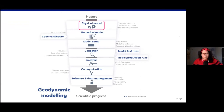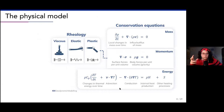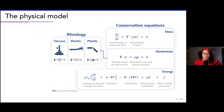Now let's think about the physics - the physical model. For the physical model, we have the conservation equations: conservation of mass, conservation of momentum, and conservation of energy. These three conservation equations are used in numerical modeling, also beyond geodynamic modeling - just three very standard conservation equations. We need to have some kind of rheology that feeds into the momentum equation, and in our case we have viscous, elastic, and plastic for geodynamic modeling.